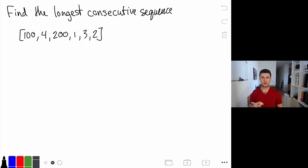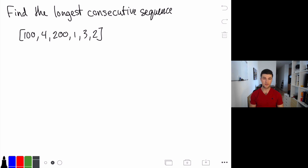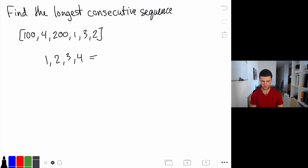In this video we're going to talk about finding the longest consecutive sequence in an unsorted array. We have an example input here and the longest consecutive sequence — remember it's just consecutive numbers but they don't have to be in order in the array. Our longest consecutive sequence here is 1, 2, 3, 4 and so the length of our sequence is 4.